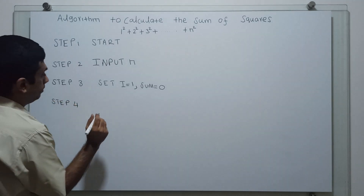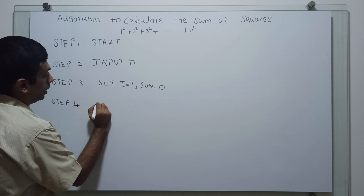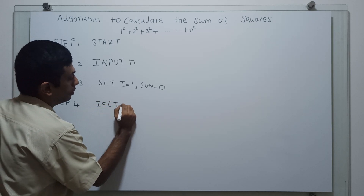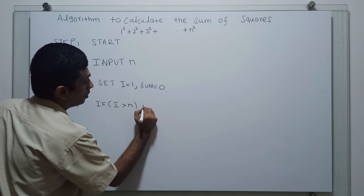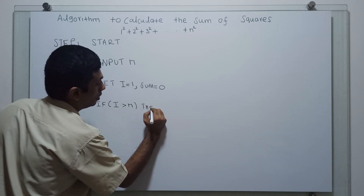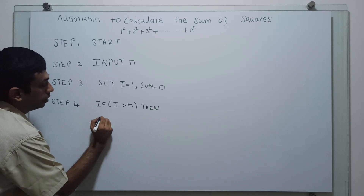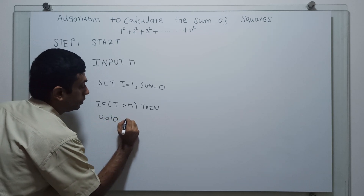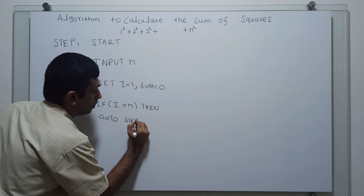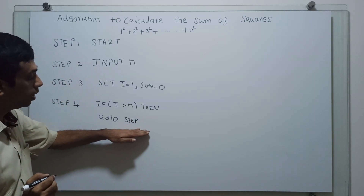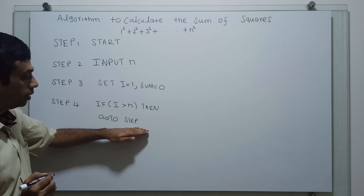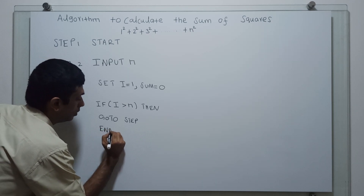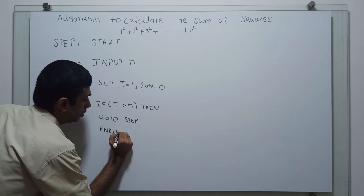Step 4: I am checking if i is greater than n, then I am writing a go-to statement — go to step... I am making this blank for now, so we have to move this to the print statement. The step of the print statement.